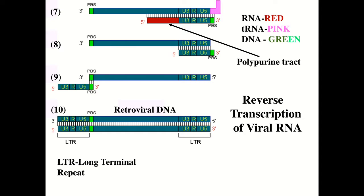Reverse transcriptase is now going to prime from the 3' end of that polypurine tract and synthesize at the DNA level the unique 3' sequence, the repeat sequence, the U5 sequence, and the primer binding site. At this point there is something special about this particular arrangement of the RNA-DNA hybrid, because RNase H acquires the activity to degrade every piece of RNA that's bound to that DNA. In step eight, RNase H activity now degrades the polypurine tract and also degrades the tRNA primer.